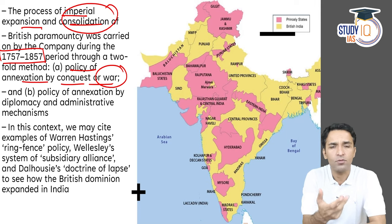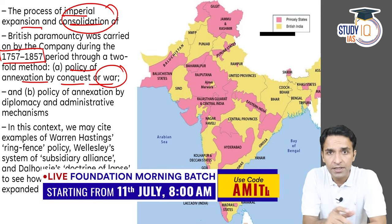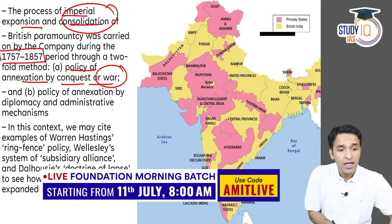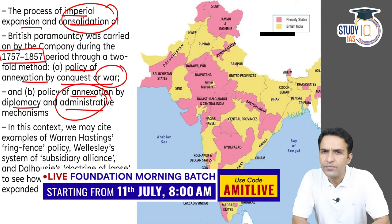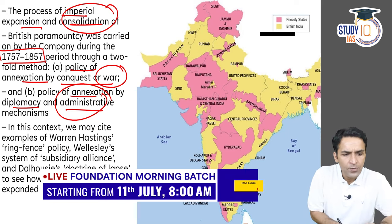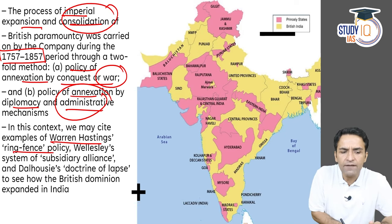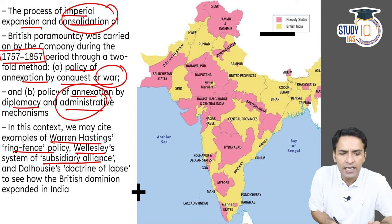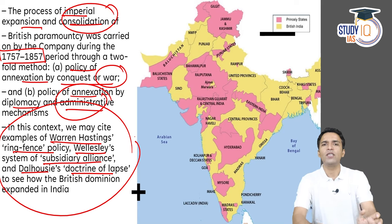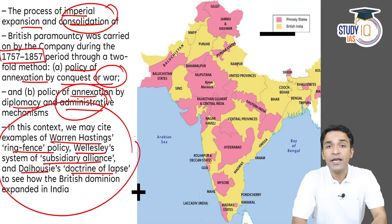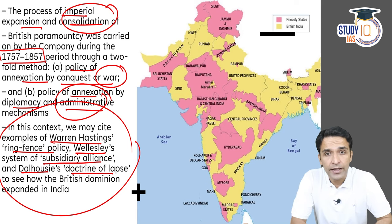The other policy was annexation through diplomacy or administrative mechanism — like Warren Hastings's Ring Fence policy, Wellesley's Subsidiary Alliance, and Dalhousie's Doctrine of Lapse — which is how the British Empire was built in the Indian subcontinent. You have three names to remember: which is the administrative policy and which is the Governor-General. Wellesley's policy is the Subsidiary Alliance, and Dalhousie used the Doctrine of Lapse.